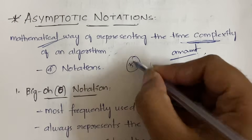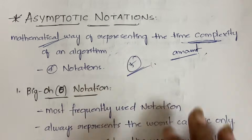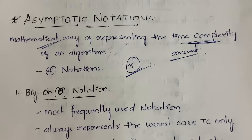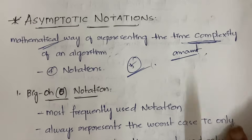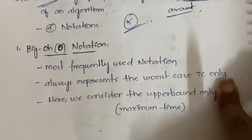There are four notations — actually, to be more precise, five notations. According to JNTU-H syllabus there are four, but let us look at the fifth one also, which is very simple.